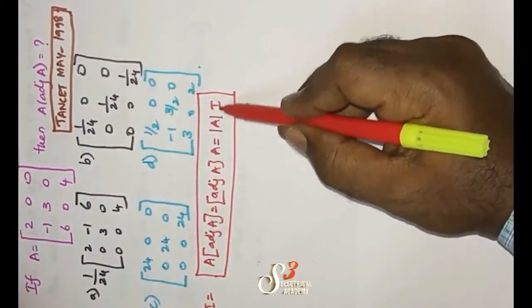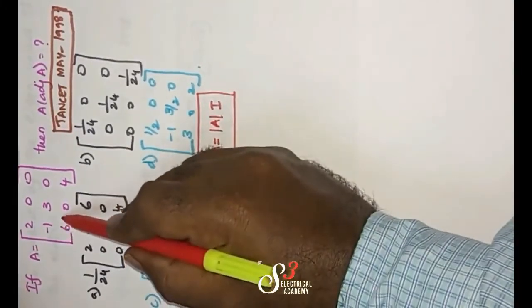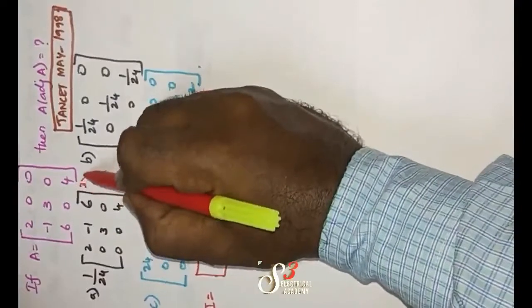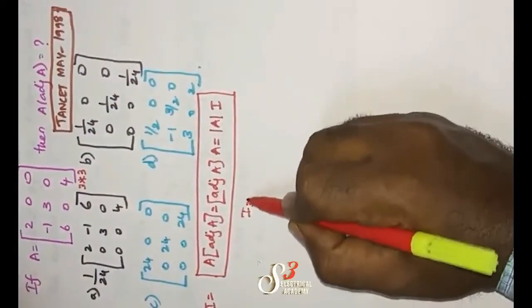Just find out the determinant and multiply with I matrix. The size of I matrix will be equal to size of A matrix. Here the size of A matrix will be 3 rows as well as 3 columns. So I matrix will also have 3 by 3 matrix.